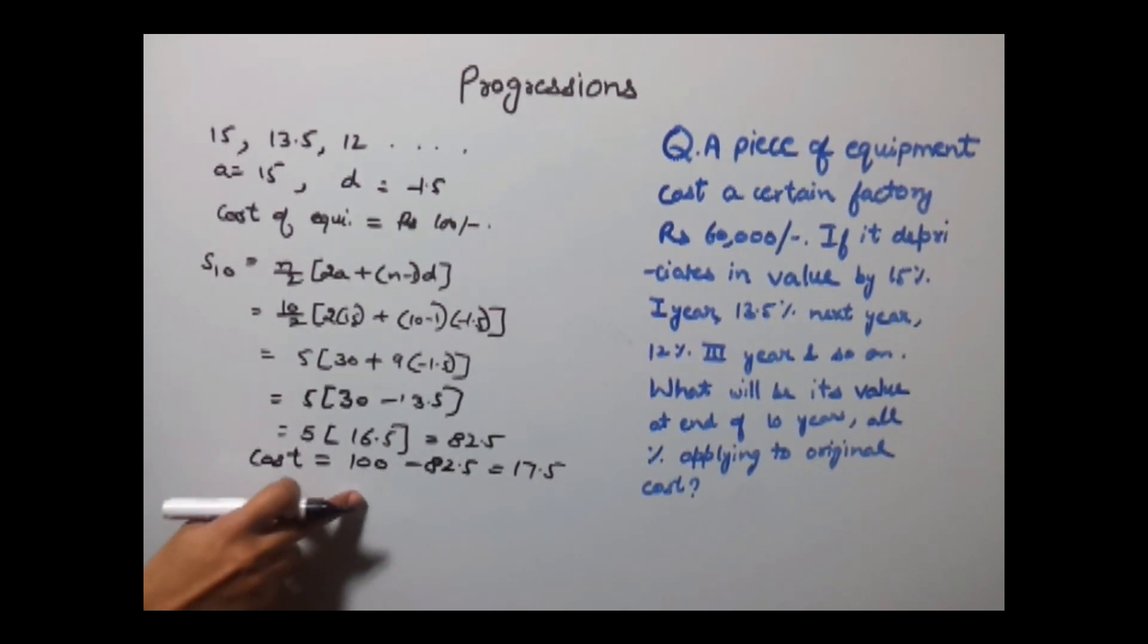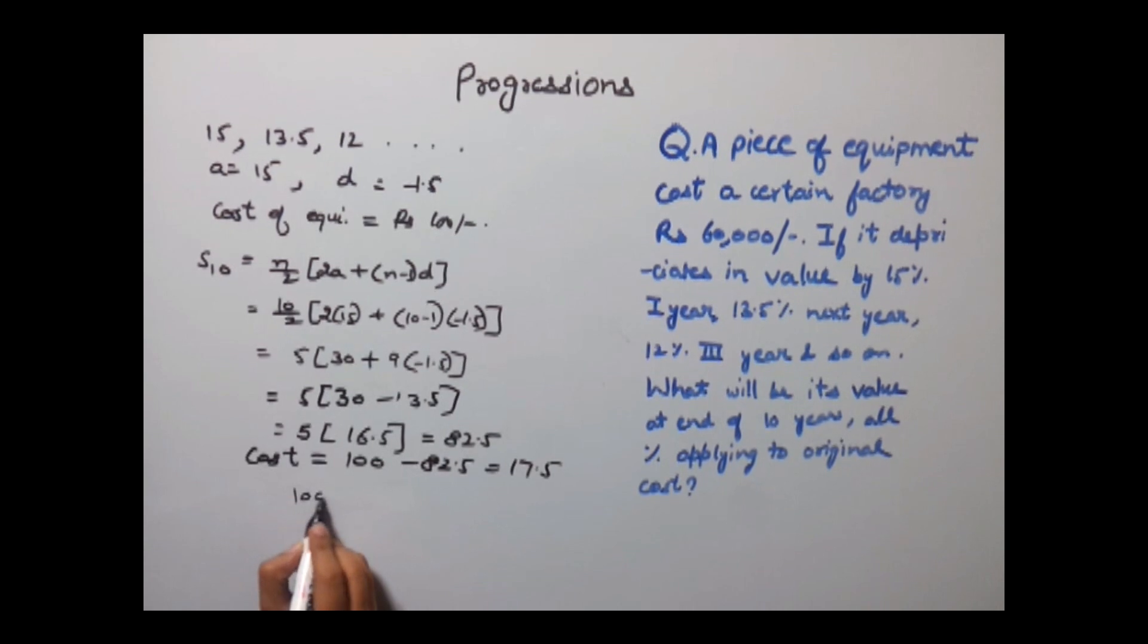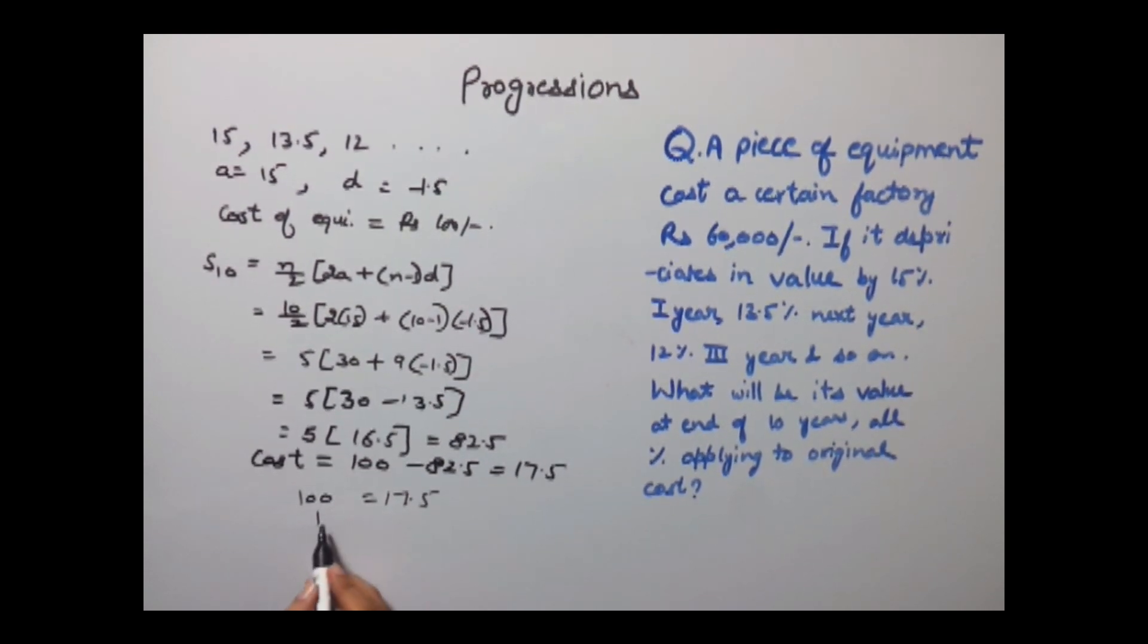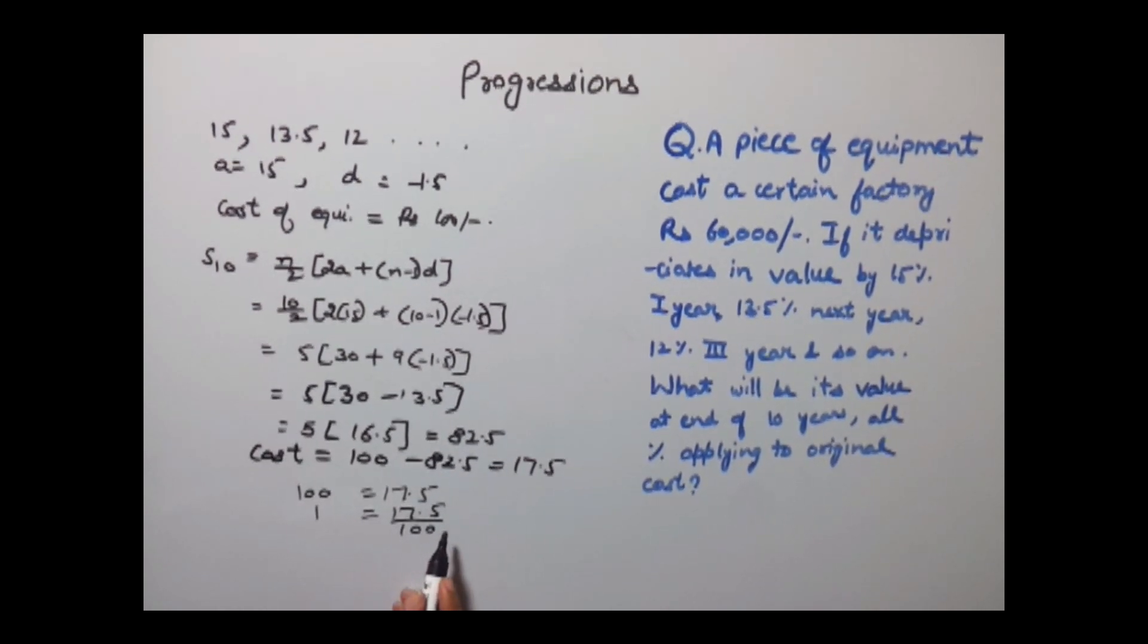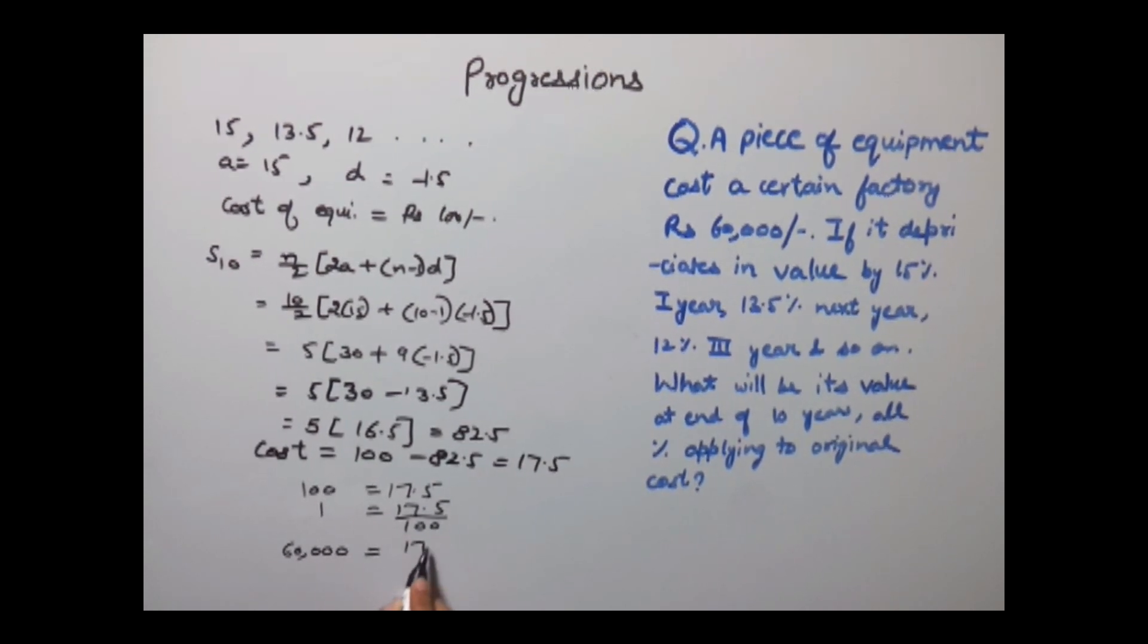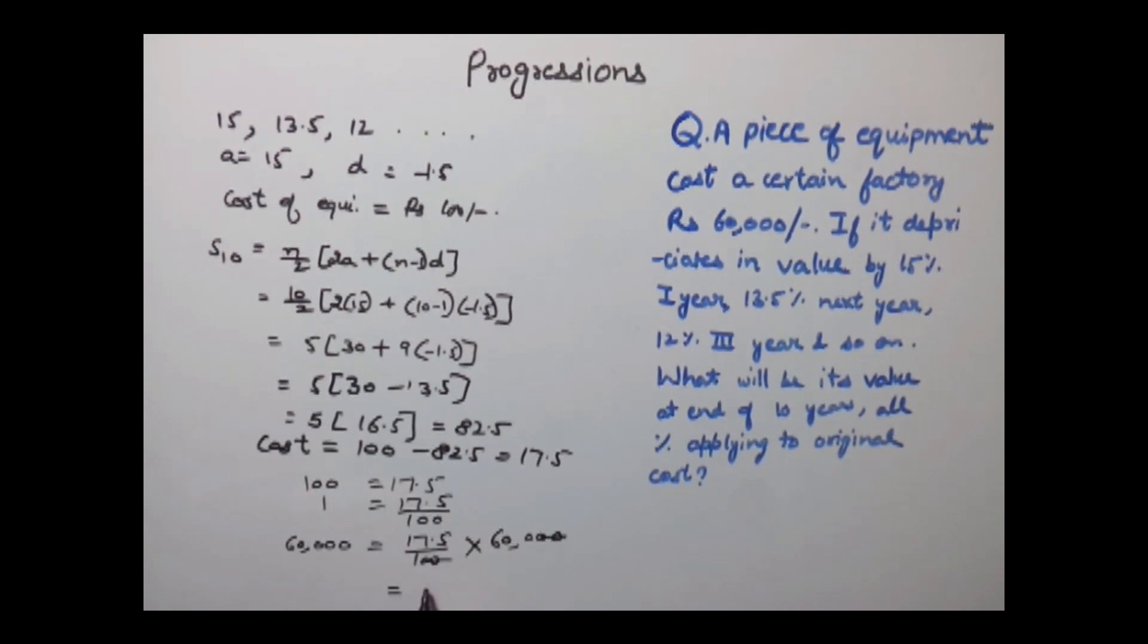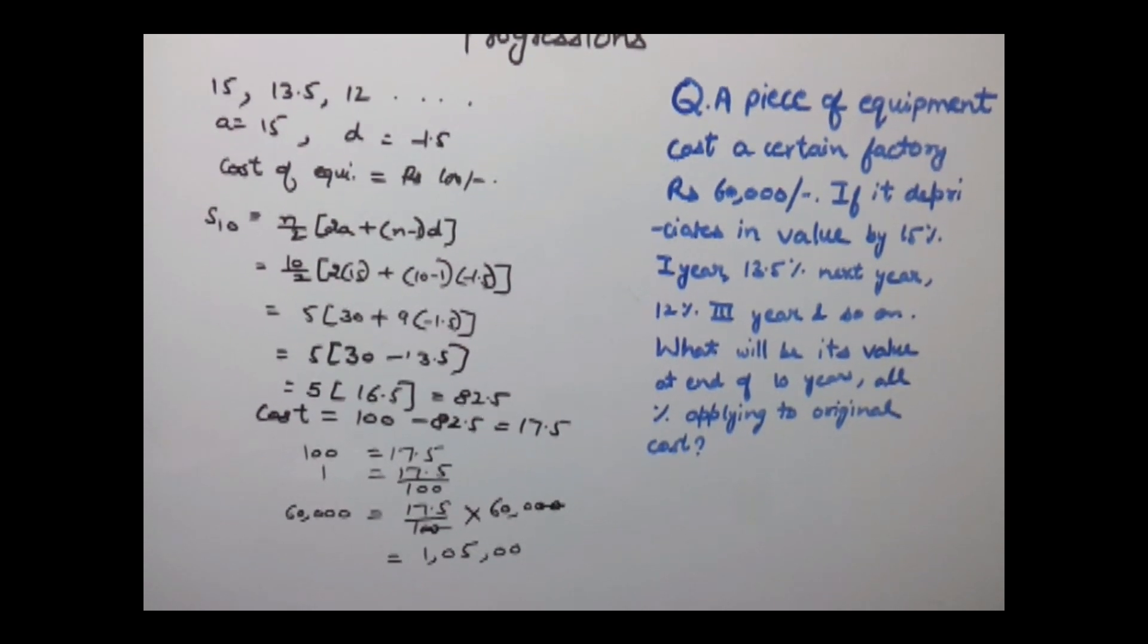Now our actual value of the equipment is Rs 60,000. So for our 100 rupee equipment, the actual value would be 17.5. For equipment which is Rs 1, it would be 17.5 divided by 100. And for equipment whose value is 60,000, this will be 17.5 upon 100 into 60,000. Cancel it and you will get 10,500 as the answer.